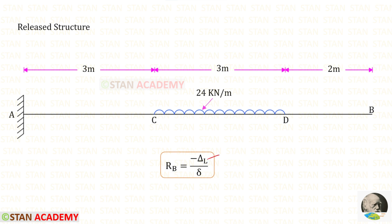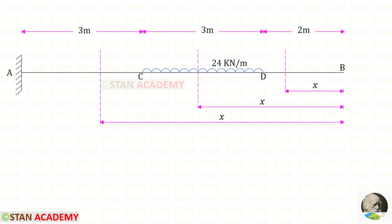To find both of these two displacements, we are going to use the unit load method. In that method, we have to make sections. In this beam there are 3 different parts: Bd, dc, and ca. So we have to make 3 sections — one in Bd, one in dc, and one in ca. You can see that I have made 3 sections.